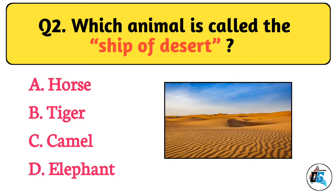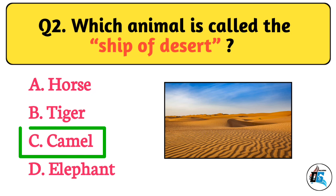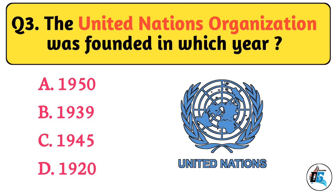Question No. 2. Which animal is called the ship of the desert? The right answer is Option C: Camel.